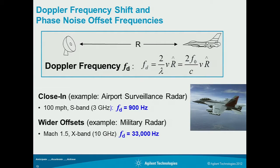Let's talk about airport surveillance radar. Maybe at three gigahertz you're seeing a hundred mile per hour return — an airplane traveling through the air. Its Doppler return signal offset is going to be 900 hertz. Right there you know the phase noise at the 900 hertz offset is likely going to matter to you as the designer.